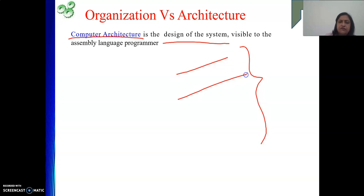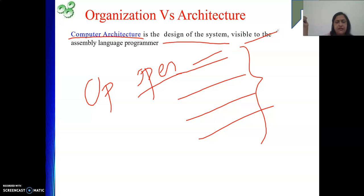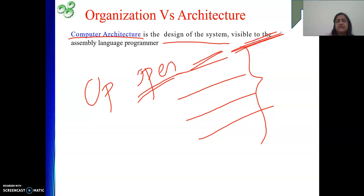An instruction has an opcode and operands — the operand count may be one, two, or three. Operands may be in memory or in registers. Whatever concepts are used while writing assembly language code — such as the instruction set, which defines what instructions are available like add, sub, jump, and AND — those are part of your architecture. If multiplication and division are not in the instruction set, you must implement them using add or subtract in a loop.